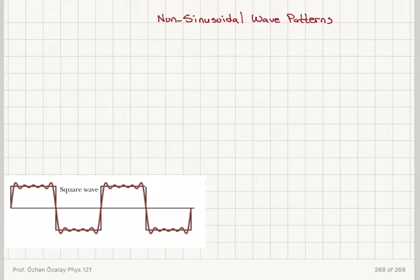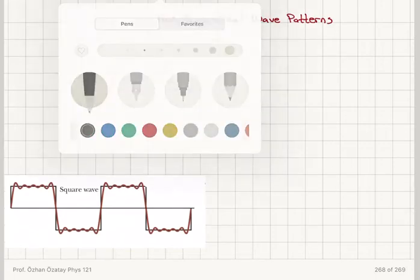Now we're going to talk about what happens if we have a non-sinusoidal wave pattern. When you listen to a sound, sometimes it sounds very musical, sometimes it's noise. First of all, I would like to address the issue of what is a musical sound and what is noise.